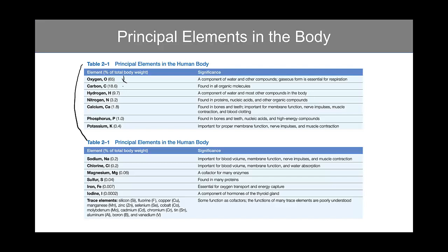We have lots of oxygen, lots of carbon, hydrogen, nitrogen. Our bones are loaded with calcium and phosphorus and potassium. These are the principal elements.